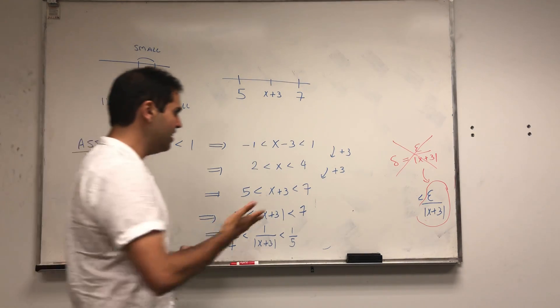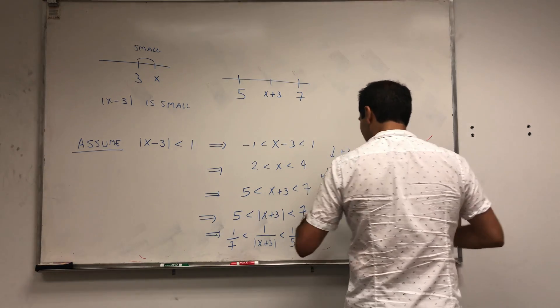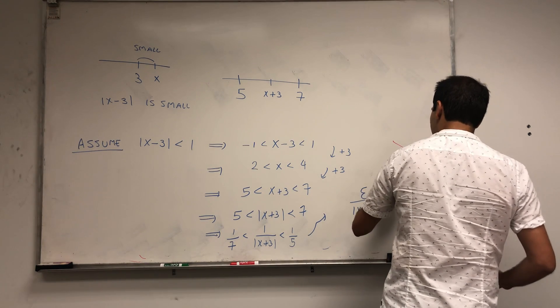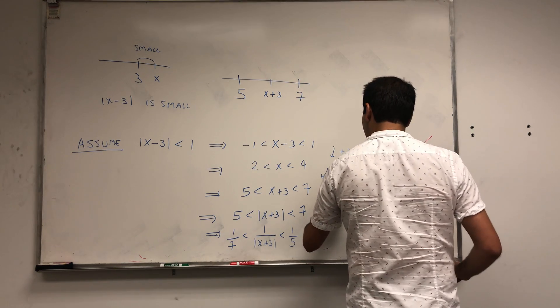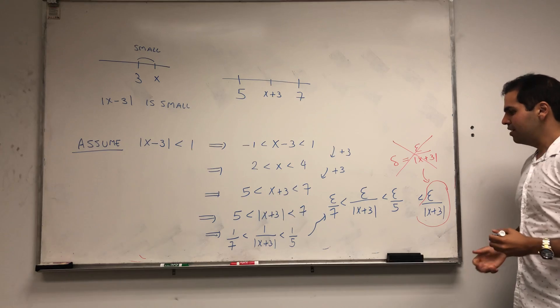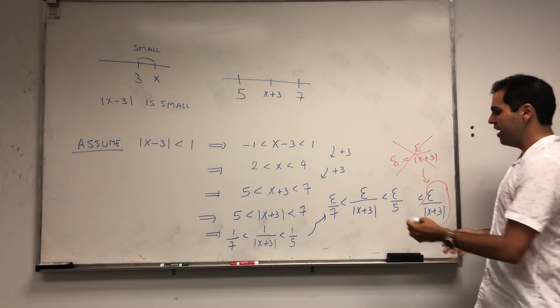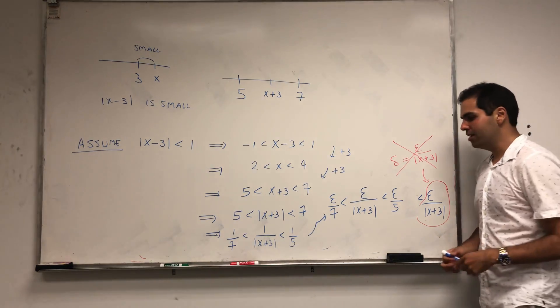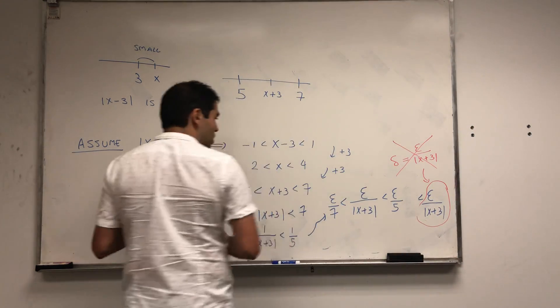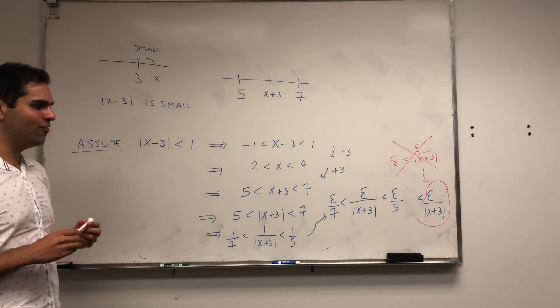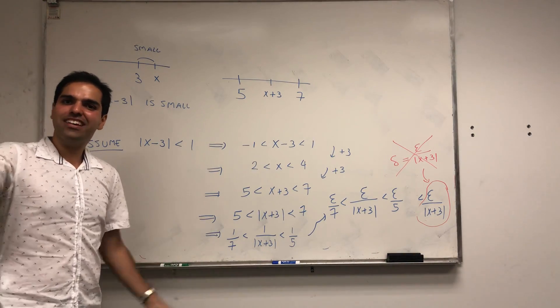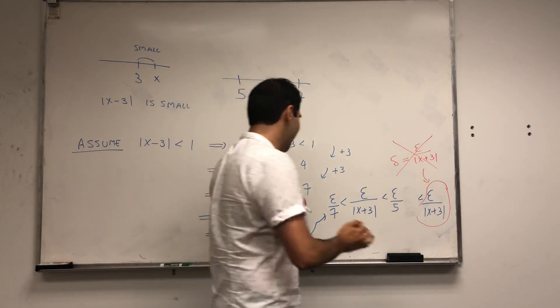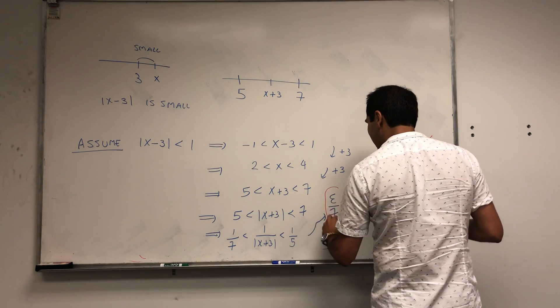This is very good because then multiply both sides by epsilon. Epsilon over x plus 3 is between epsilon over 7 and epsilon over 5. That was our choice for delta, and we found this choice that depends on x is actually between epsilon over 7 and epsilon over 5. Which one do you pick?